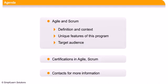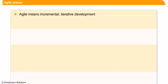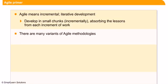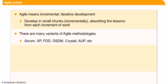Agile means incremental and iterative development of any objective — whether a product or a service. For example, a product which is a set of features will be developed in smaller portions in an incremental manner and delivered to the customer; these incremental portions are called sprints. There are many variants of Agile methodologies, like Scrum, XP, FDD, DSDM, Crystal, AUP, and so on.